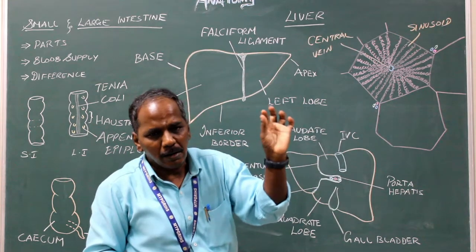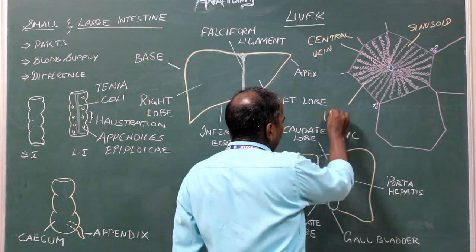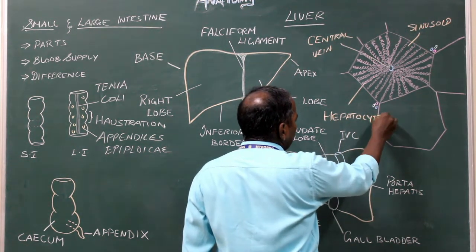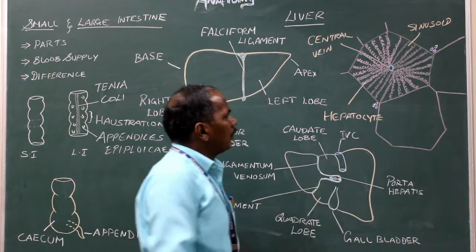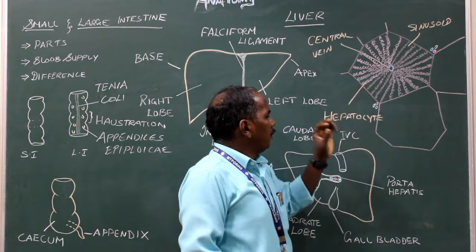Rows of cells are nothing but cells of the liver known as hepatocytes. So the sinusoids are lined by hepatocytes.